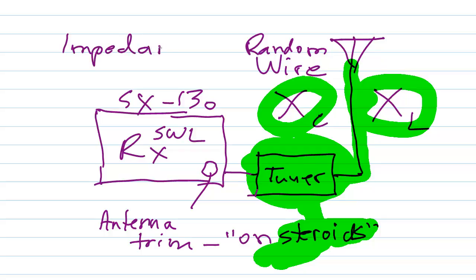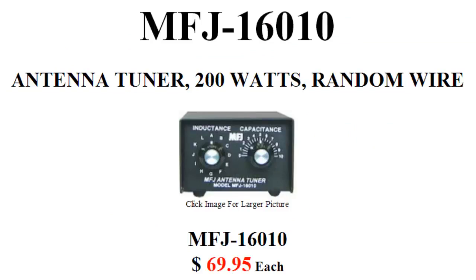Now, impedance... I remember editing an entire book. And the title of that book was Impedance. That ought to give you an idea of how complex and diverse a subject that is. But basically, a tuner, like this MFJ Enterprises 16010, will act like an antenna trimmer par excellence. Or it should. You simply adjust the inductance and capacitance controls until you get the best reception. And that's all there is to it.